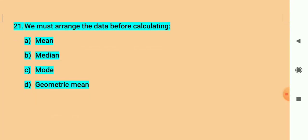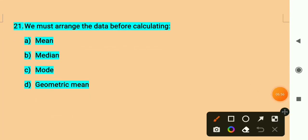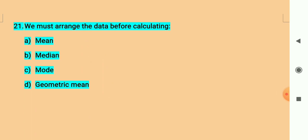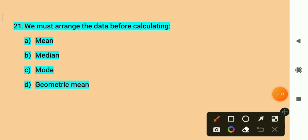Let us move forward. We must arrange the data before calculating - among these measures of central tendency, which one requires us to first arrange the data and then calculate? The word here is 'must' - we definitely have to do this. The correct answer is option B, Median. In median we first arrange the data.